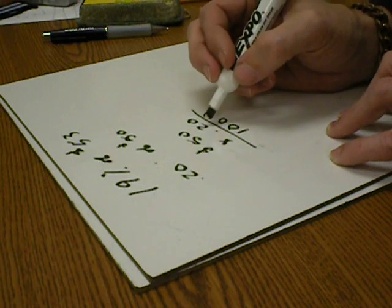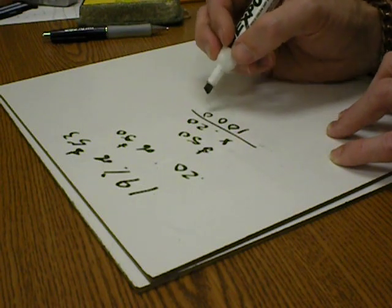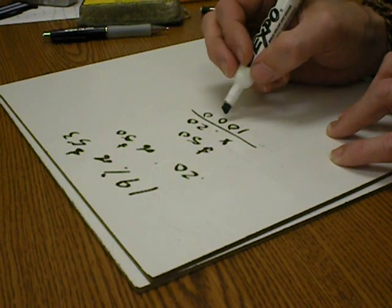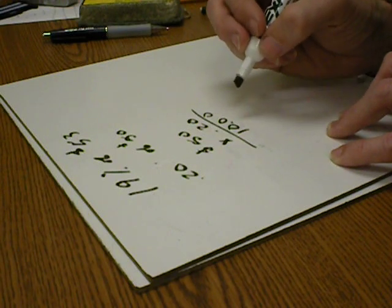Count the number of spaces behind the decimal—one, two. Put it in your answer here—one, two, decimal.